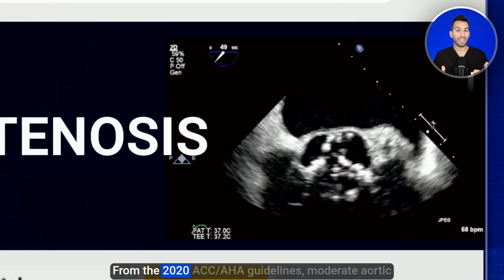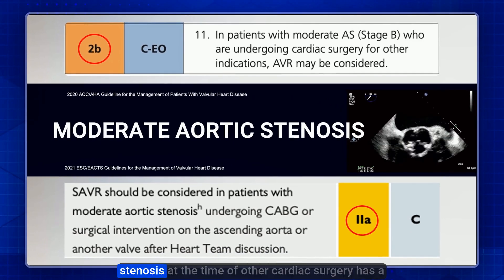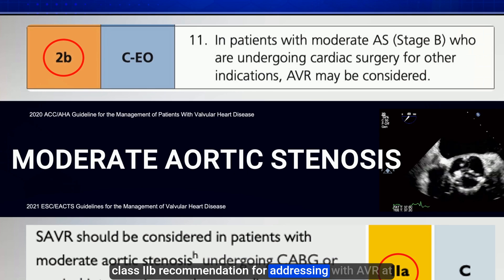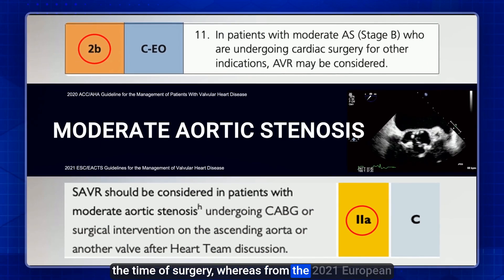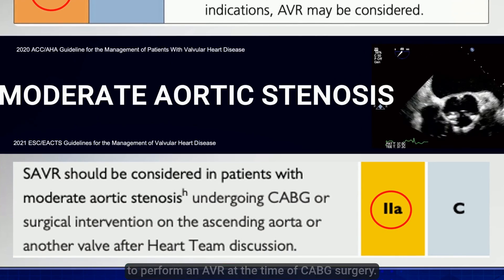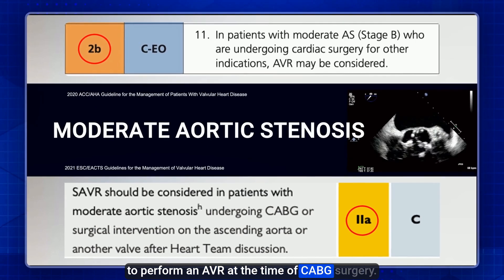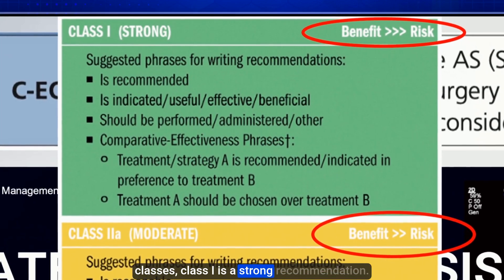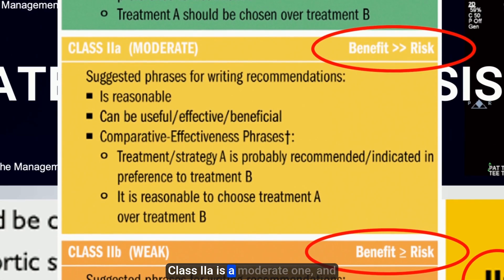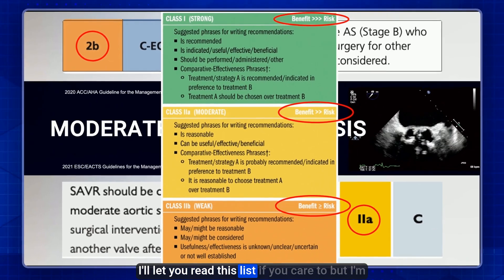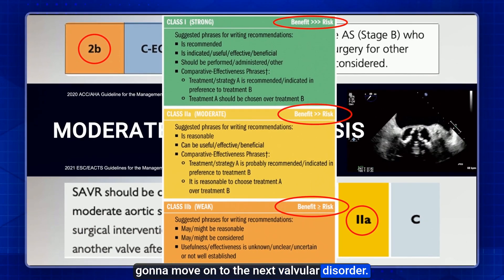From the 2020 ACC/AHA Guidelines, moderate aortic stenosis at the time of other cardiac surgery has a Class 2B recommendation for addressing with AVR at the time of surgery. Whereas from the 2021 European Guidelines, we see a Class 2A recommendation to perform AVR at the time of CABG surgery. As a reminder: Class 1 is a strong recommendation, Class 2A is moderate, and Class 2B is a weak recommendation.